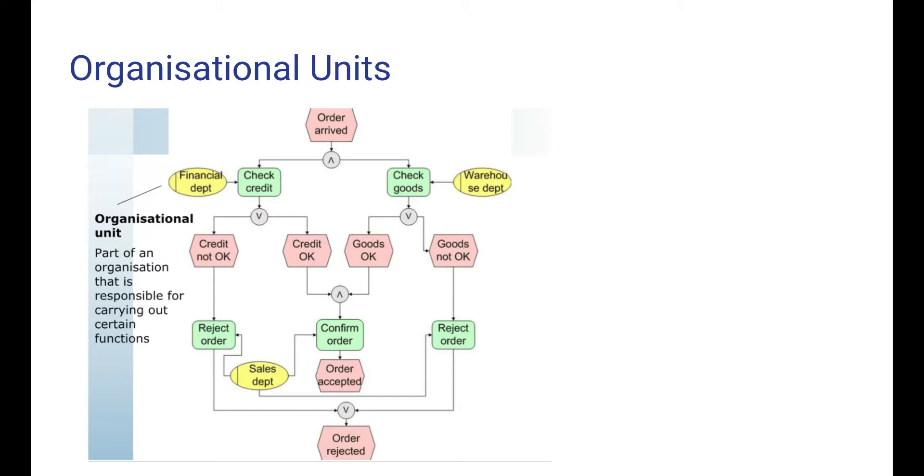An EPC diagram may also contain symbols for organizational units which are shown as yellow ellipses. An organizational unit is a part of an organization that is responsible for carrying out certain functions. For example in this figure the financial department is responsible for performing the credit checks and the warehouse department is responsible for performing goods availability checks.